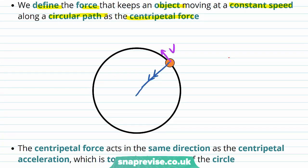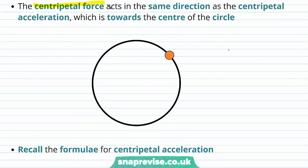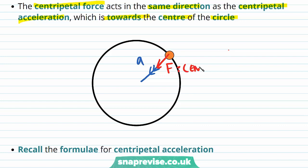So this acceleration is due to a centripetal force. The centripetal force acts in the same direction as the centripetal acceleration, which is towards the centre of the circle. So the centripetal force is in exactly the same direction as the acceleration.